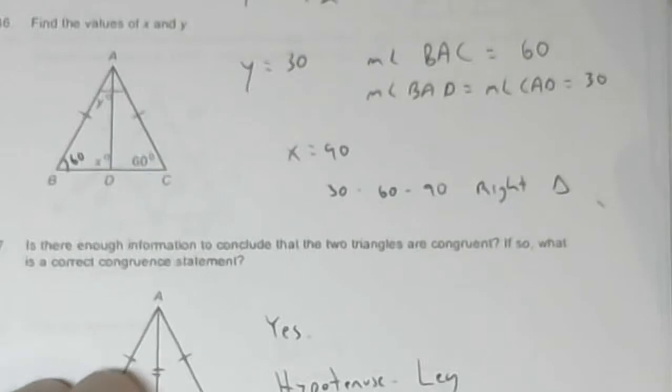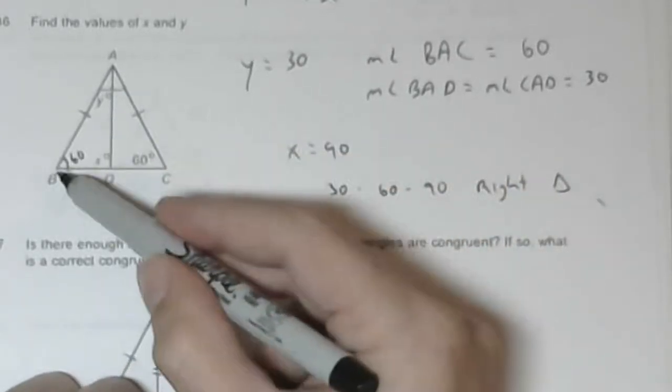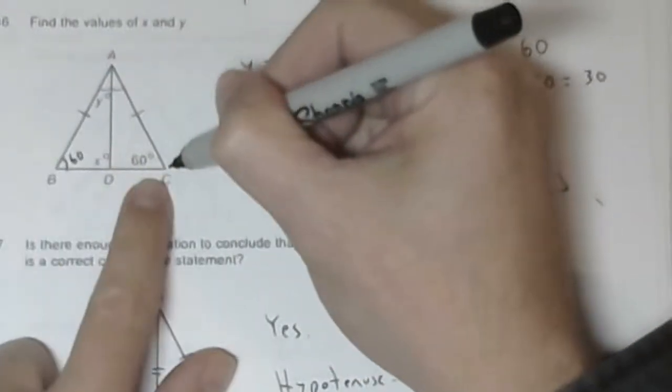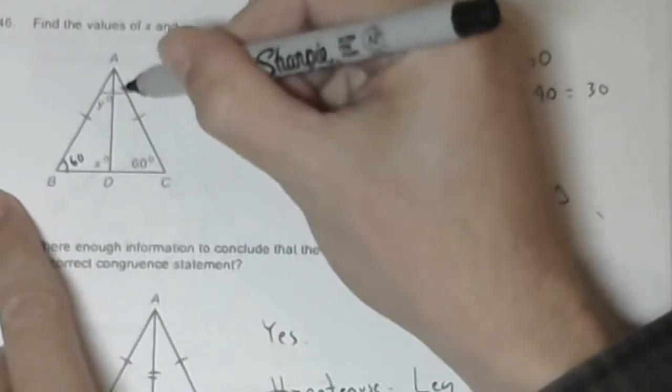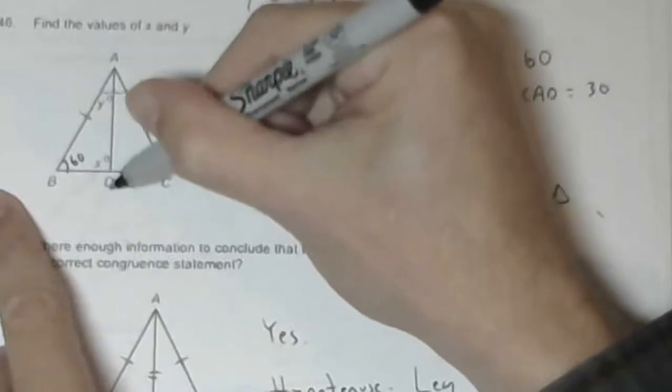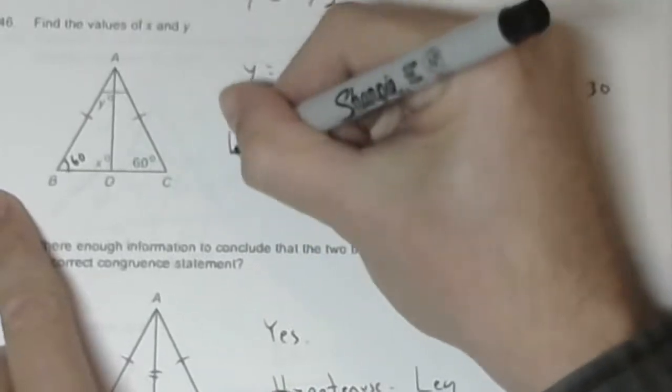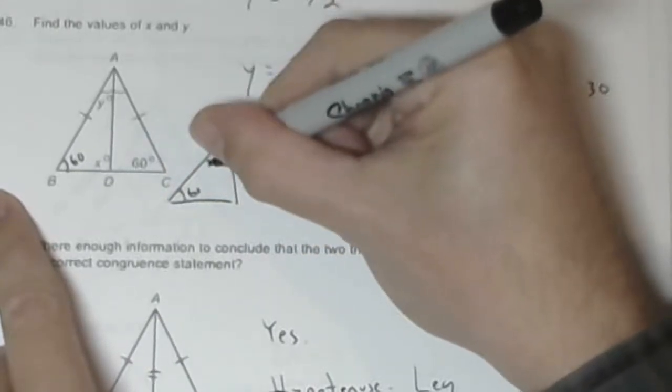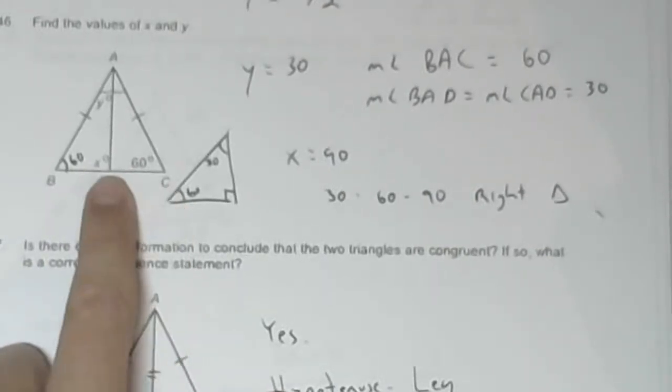Problem 46 also wants the values of X and Y. Here I'm given that AB is equal to AC, so angle B is equal to angle C. So this angle is 60. If this angle is 60 and this angle is 60, then angle BAC is equal to 60. If angle BAC is equal to 60 and angle BAD is equal to angle CAD, then AD is a bisector and both these angles are 30. So Y equals 30. Now if I have a triangle where this is 60 and this is 30, that is a right angle. 30, 60, 90 right triangle. X is 90.